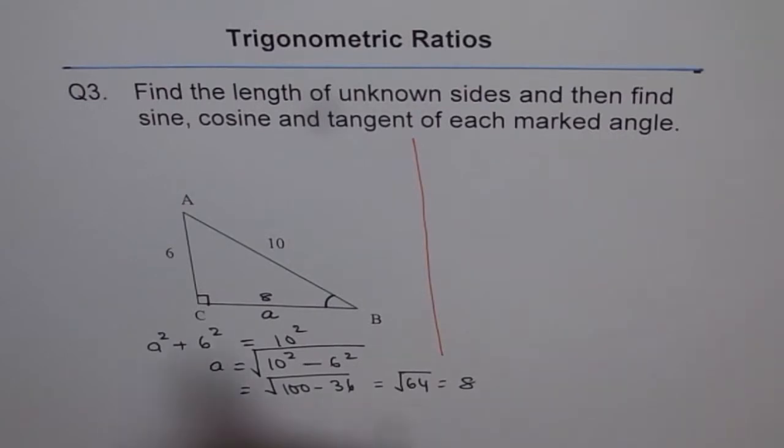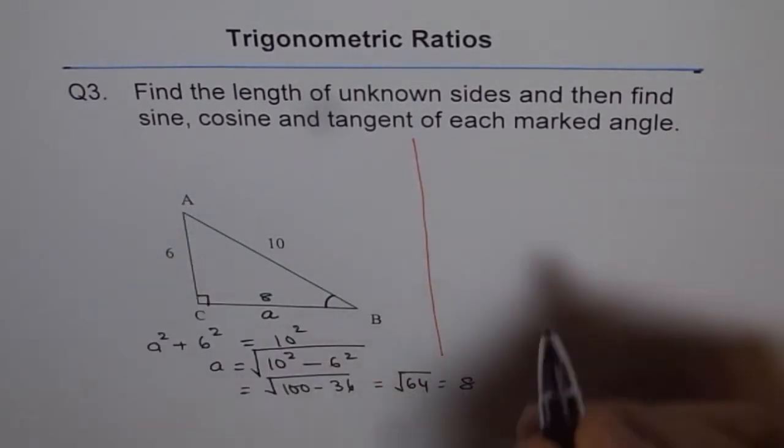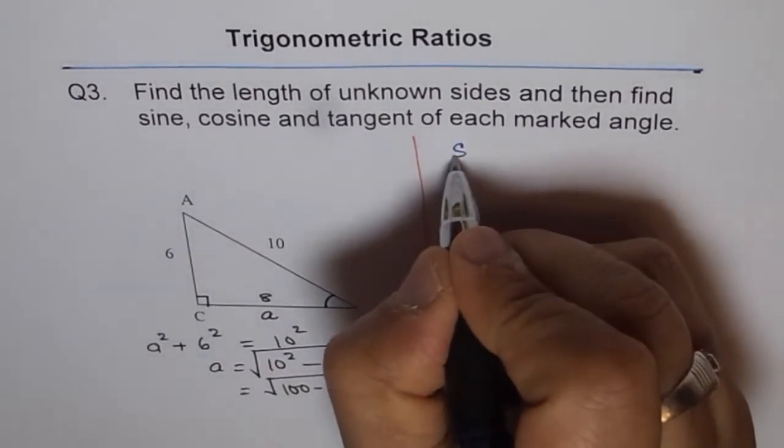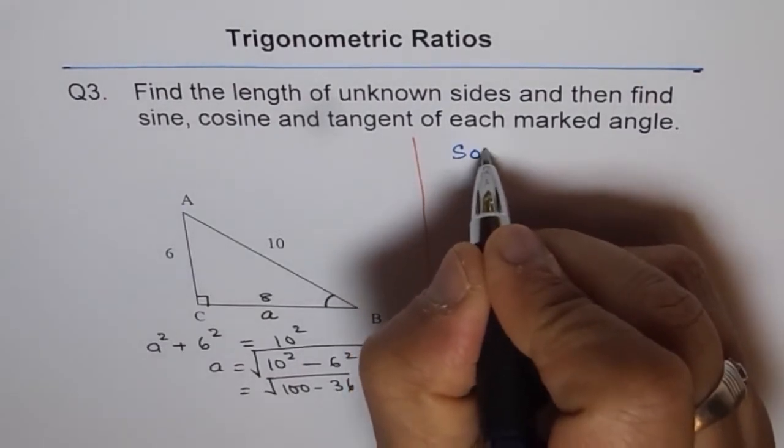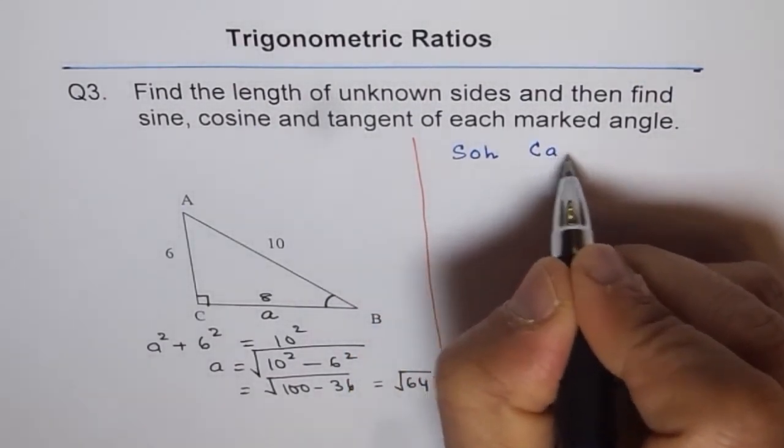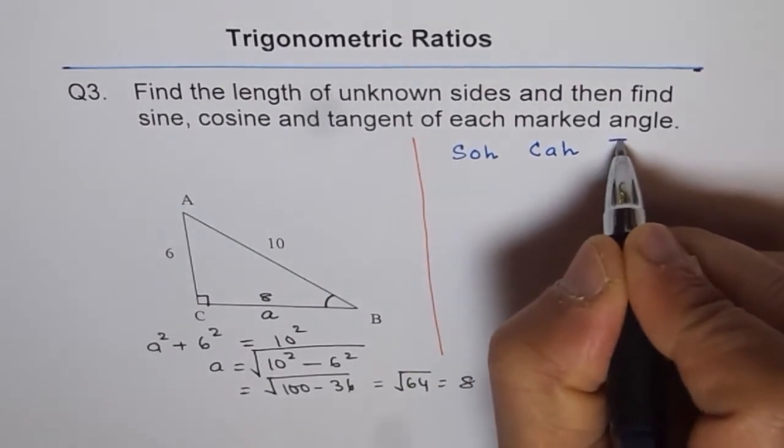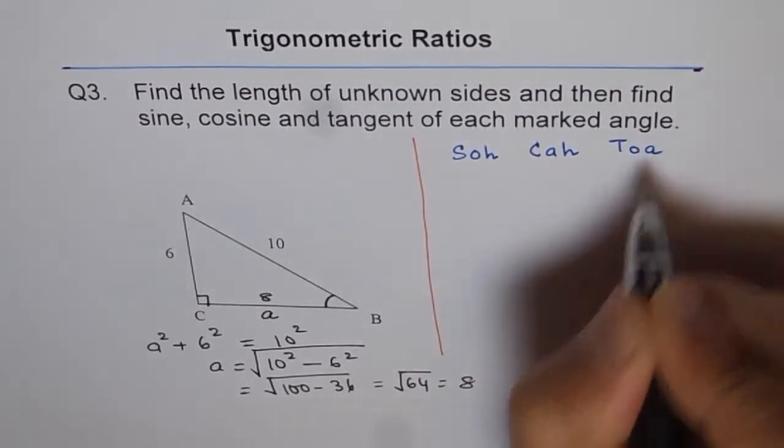To find trigonometric ratios - sine, cosine and tangent - here is a quick reminder. Sine is opposite over hypotenuse. Cosine is adjacent over hypotenuse. Tangent is opposite over adjacent side. We will use these relations to find the ratios.